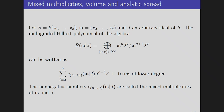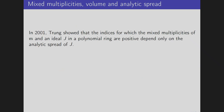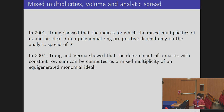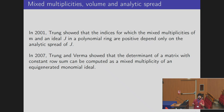The reason we need mixed multiplicities: a key result from 2001 shows that the indices for which mixed multiplicities are positive depend only on the analytic spread of I — not on m or anything else. Then in 2007, Trung and Verma showed that when a matrix has constant row sum, the determinant can be computed by finding one specific mixed multiplicity of equigenerated monomial ideals. This connects mixed multiplicities and mixed volumes, and we need essentially that special case.